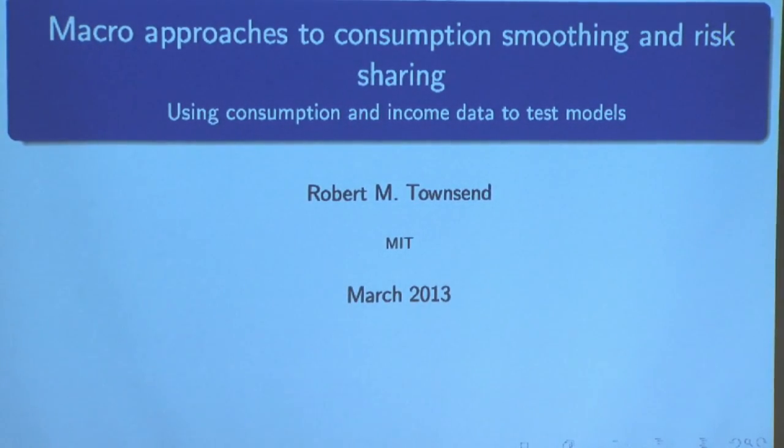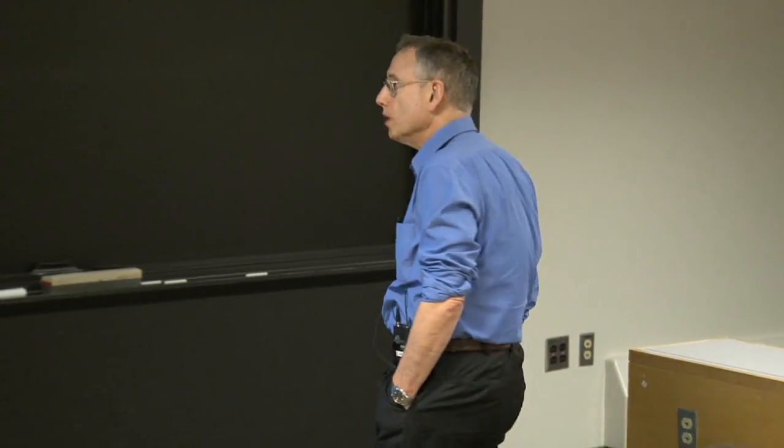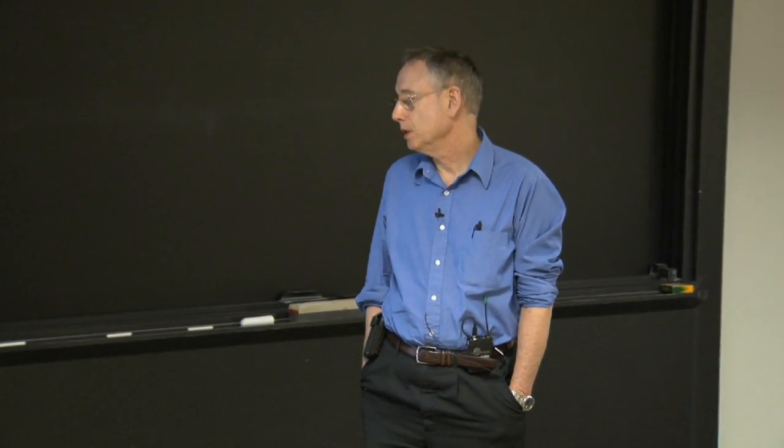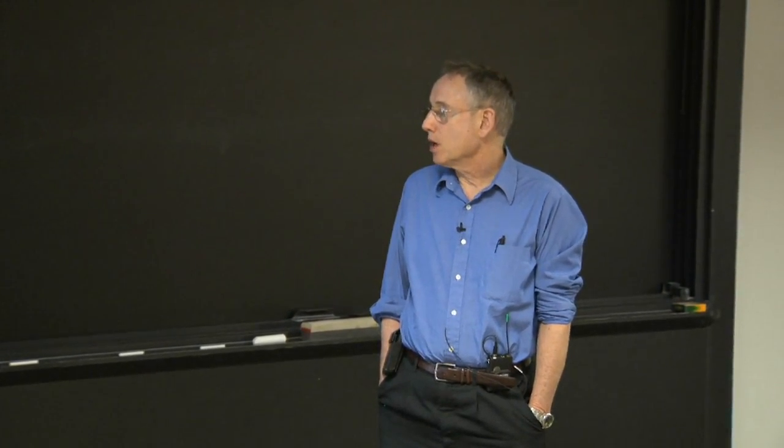Today we're going to continue the topic of consumption smoothing. This sequence began with the optimal allocation of risk bearing and what you would see in the data. We saw the benchmark was doing well in many but not all cases — there were examples where coefficients on income were higher for certain occupations and certain types of income. Then we took that same benchmark and looked at production data, which we'll come back to when we talk about labor supply. While we're on the subject of consumption smoothing, I thought it would be good to go through some alternative models that are widely used in different data sets and give you a sense of what people do in the literature.